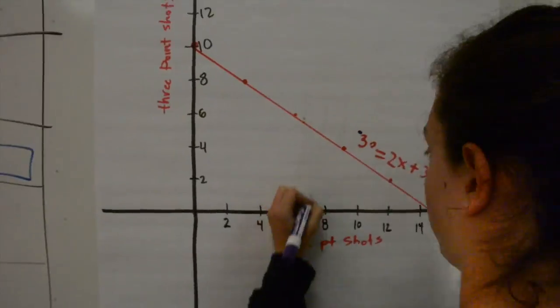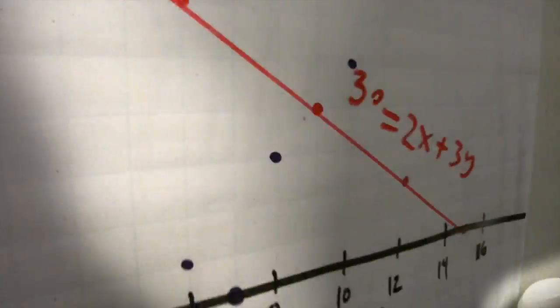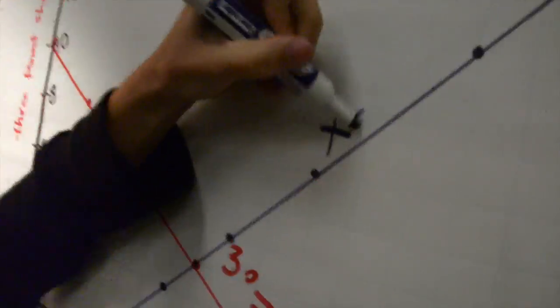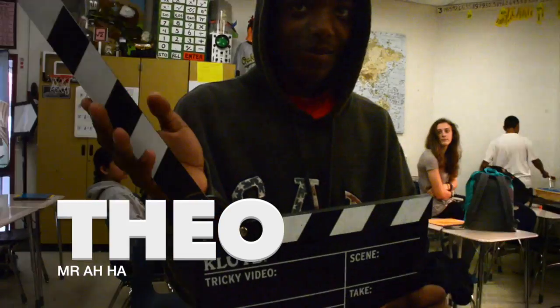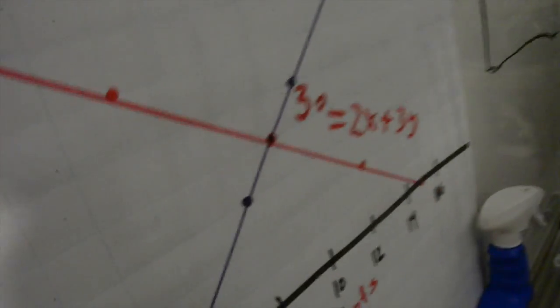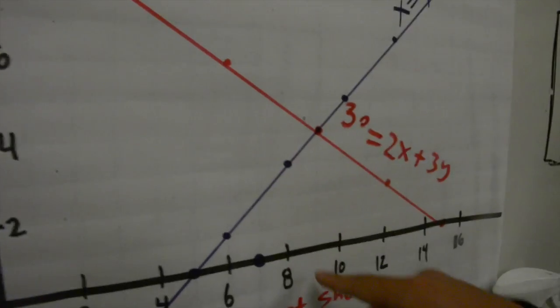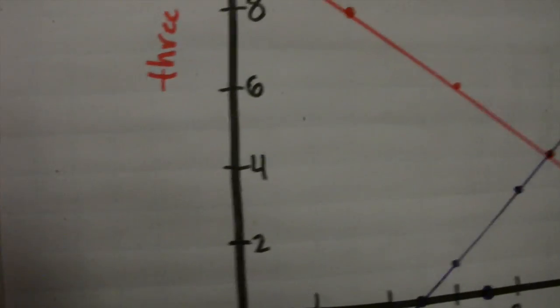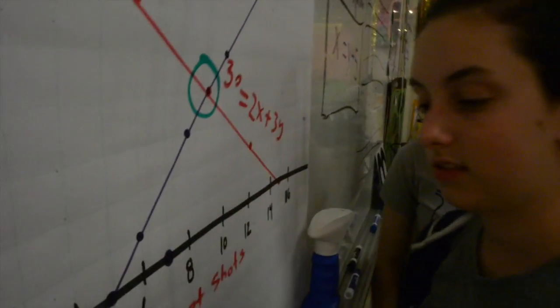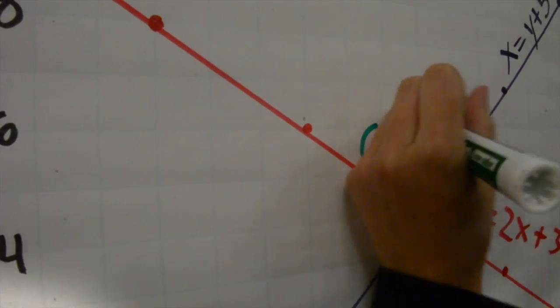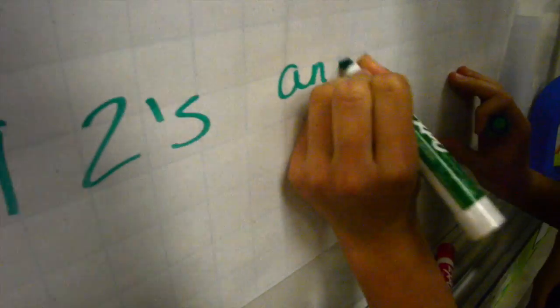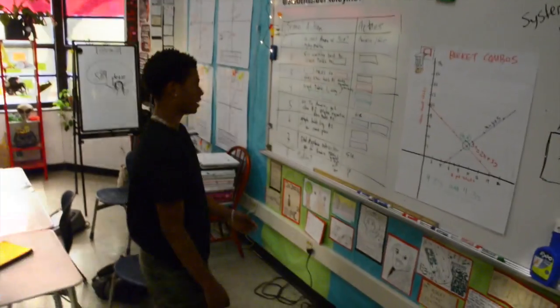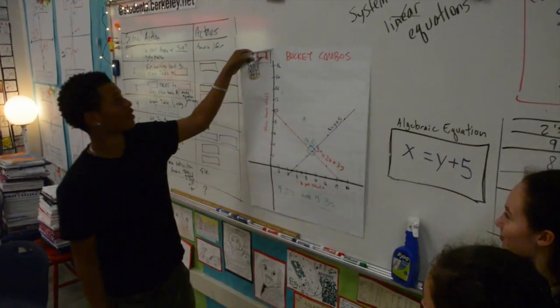Let's just graph this line on top of the other one. That looks like two answers for the price of one — sure does. This point is a solution to both lines and it looks like it's at nine, four. So I guess that's our answer.